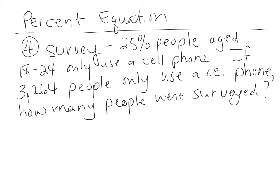The last example on percent equation is number four. It's a survey that says 25% of people aged 18 to 24 only use a cell phone — they gave up their landlines. If 3,264 people only use a cell phone, how many people were surveyed? So we have 25% of those, let's pull out the math.